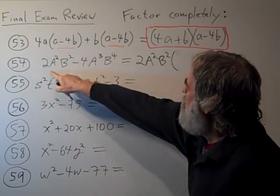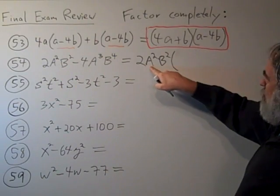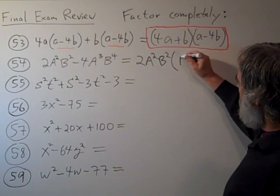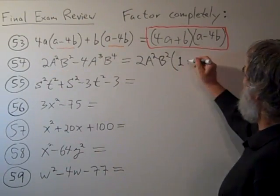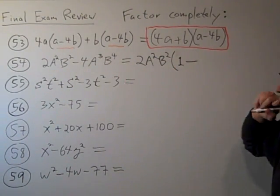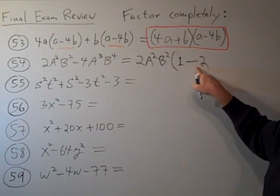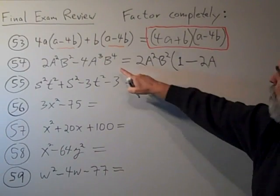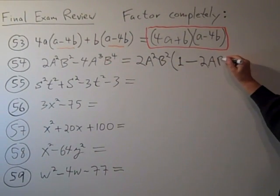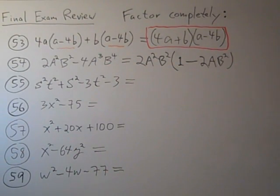So first of all, 2a squared b squared is what we need. We have 2a squared b squared, so all I need here is a 1. 2a squared b squared times 1 is 2a squared b squared. Then the minus sign from the middle. 2 times 2 is 4 to get the 4. We have a squared, we need a cubed, so we need one more a. We need b to the 4th, we have b squared, so we need two more b's. And there we have that one completely factored.